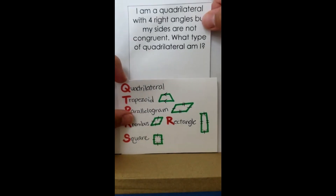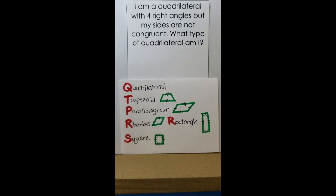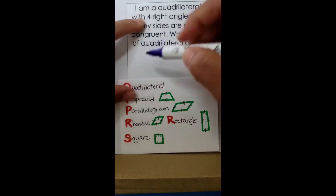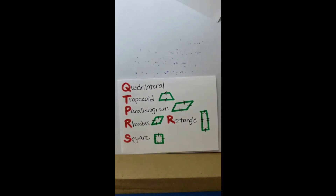Here's a riddle: I am a quadrilateral with four right angles, but my sides are not congruent. Four right angles means I'm looking at either a square or a rectangle. But since not all sides are equal, I can't be a square. The answer is rectangle.